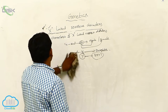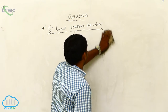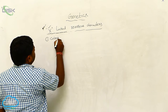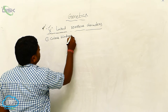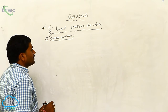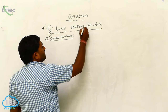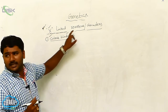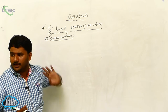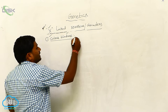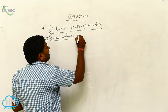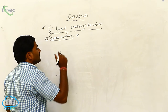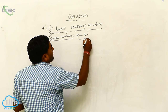We have three different examples. One is color blindness. Color blindness is an X-linked recessive disorder caused due to recessive alleles. In the eyes, there are two types of cone cells, which are responsible for red and green color perception.